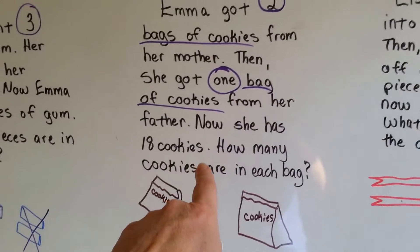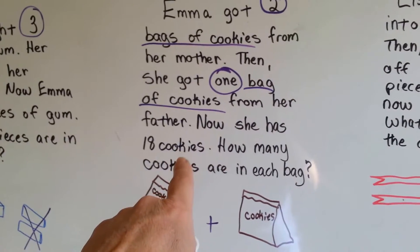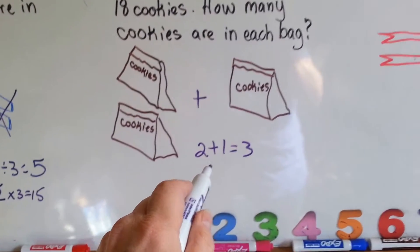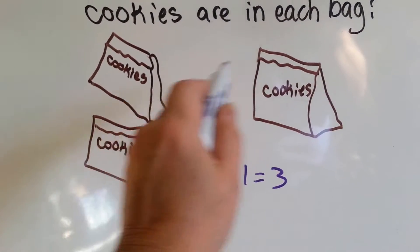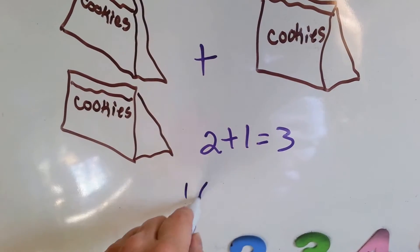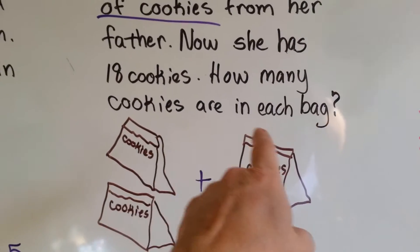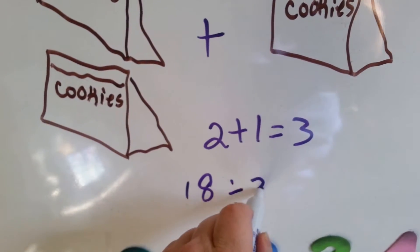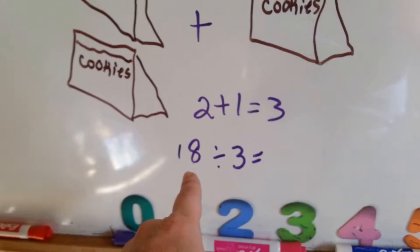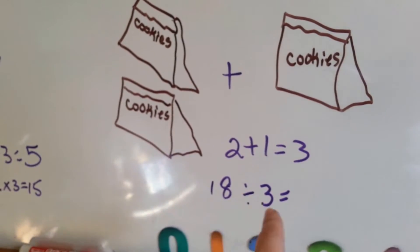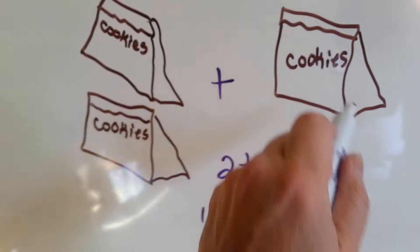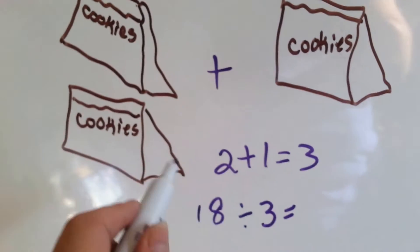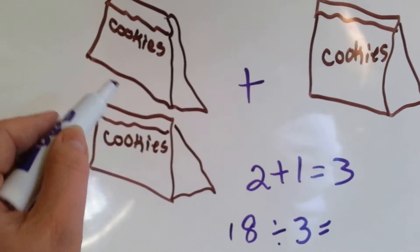Okay? Now she has 18 cookies. There's 18 cookies in these 3 bags. And we need to find out how many cookies are in each bag. So, we need to do 18 divided by 3. Let's put cookies in each bag and see how we can go to 18. Ready?